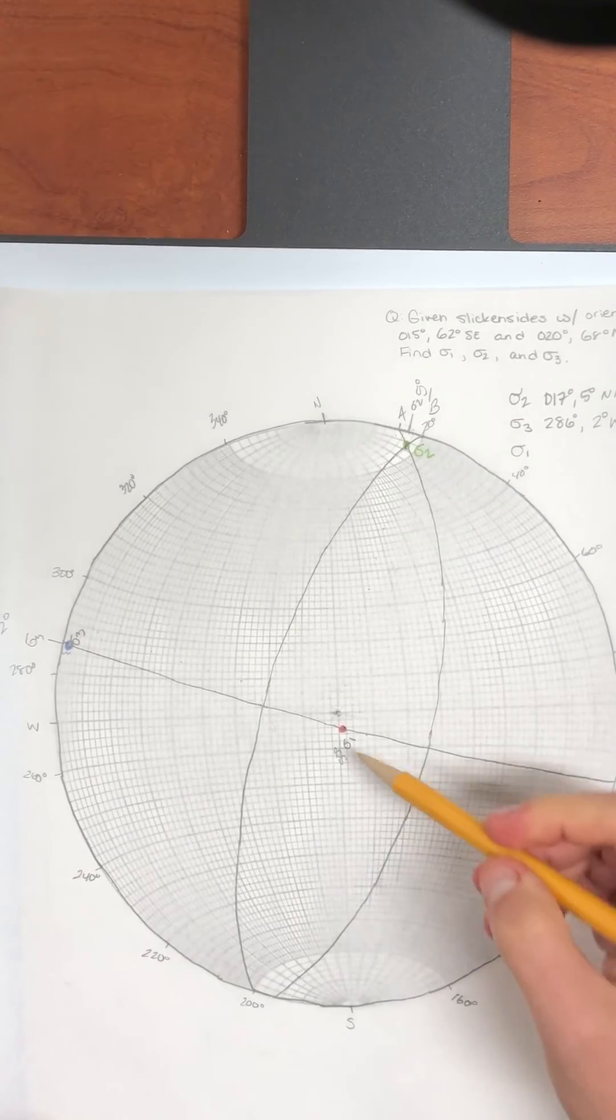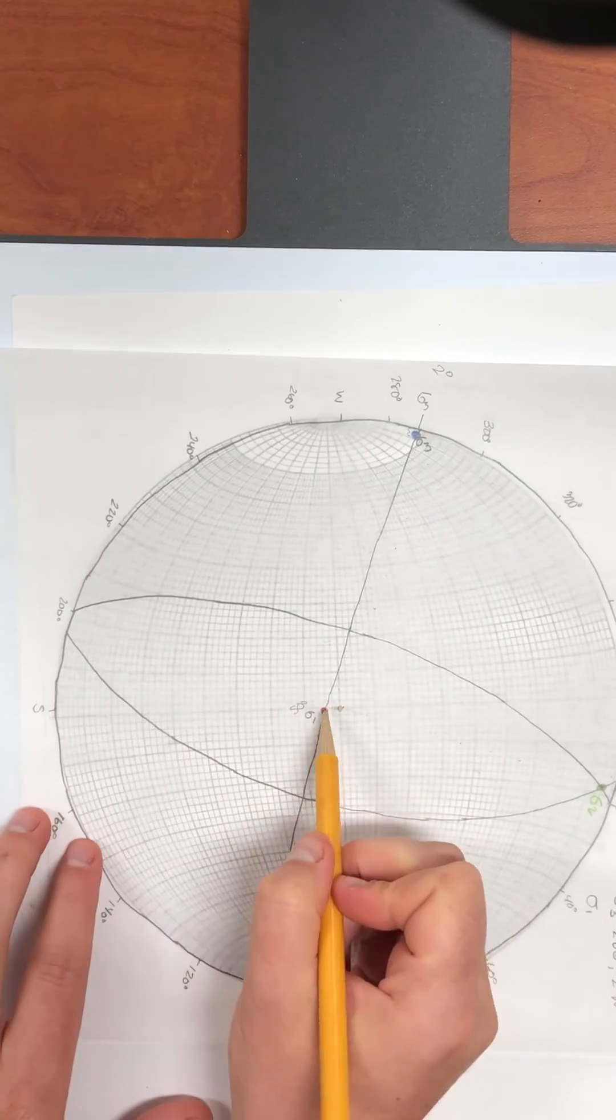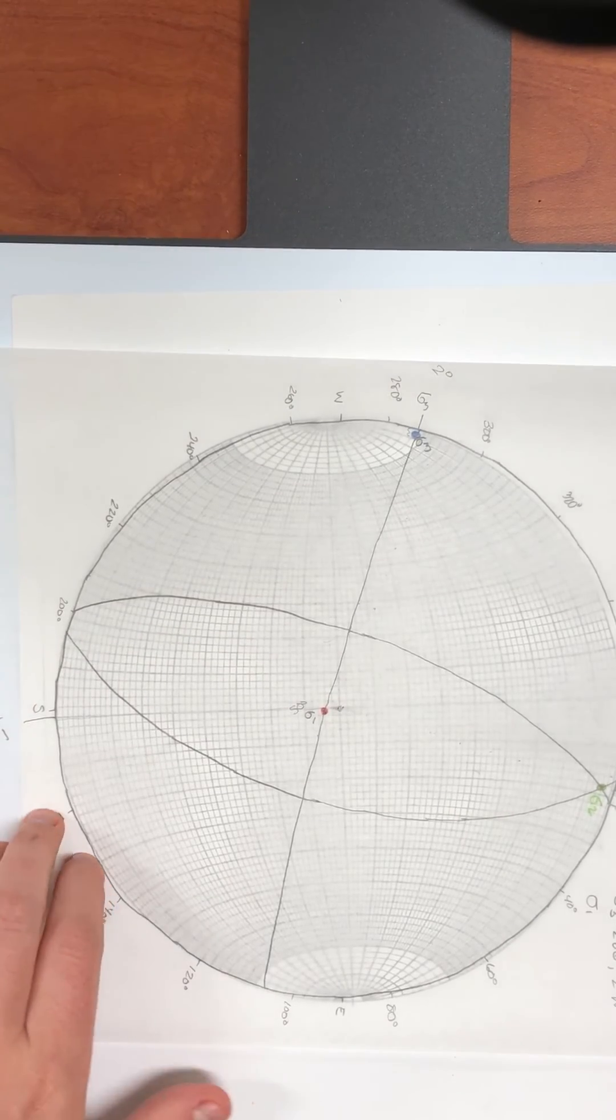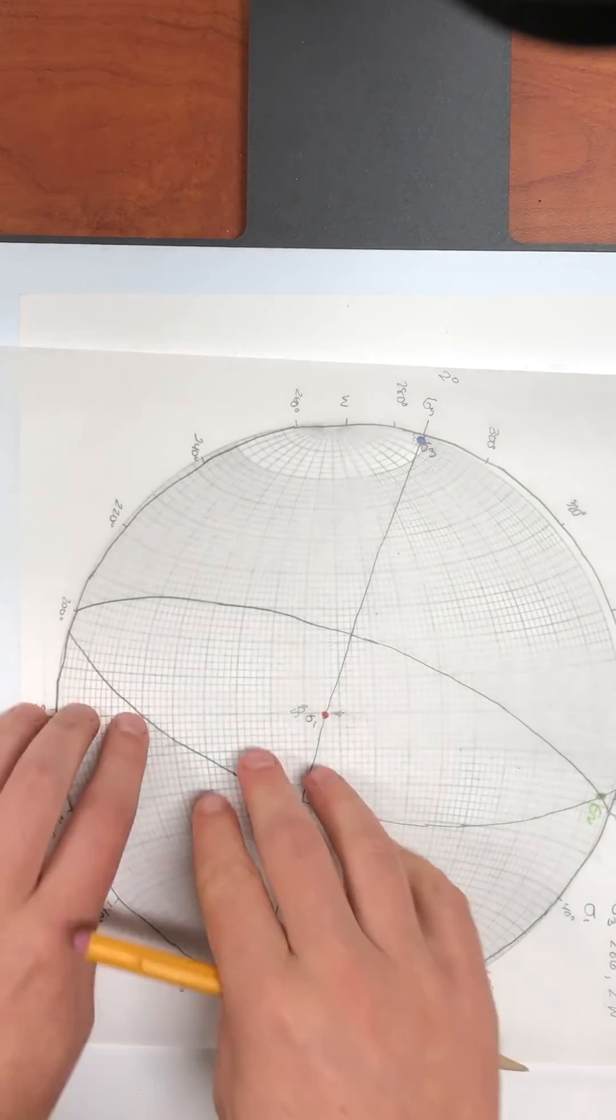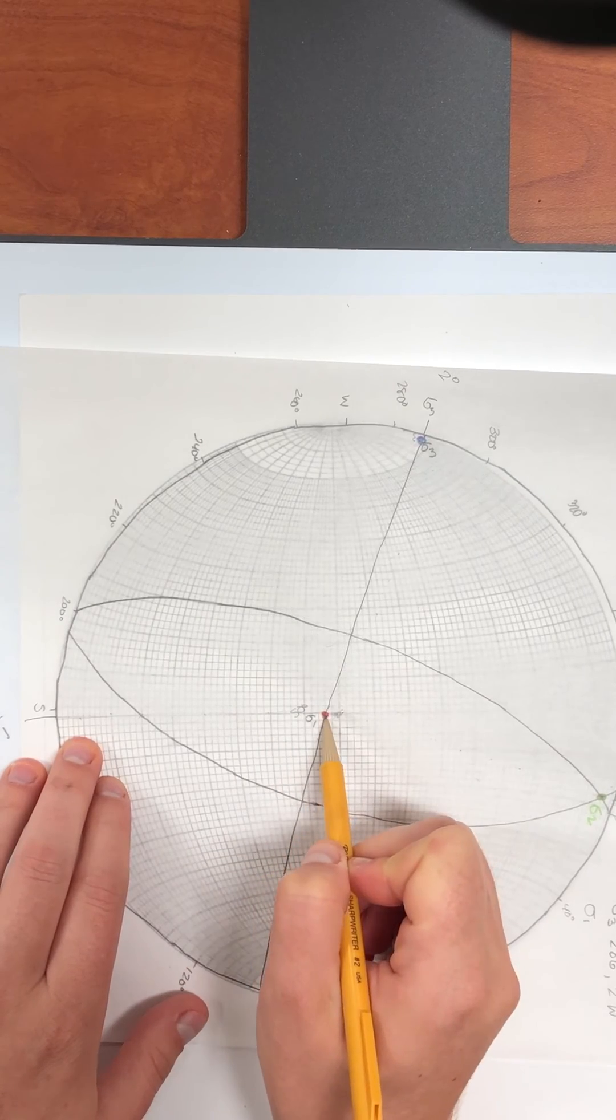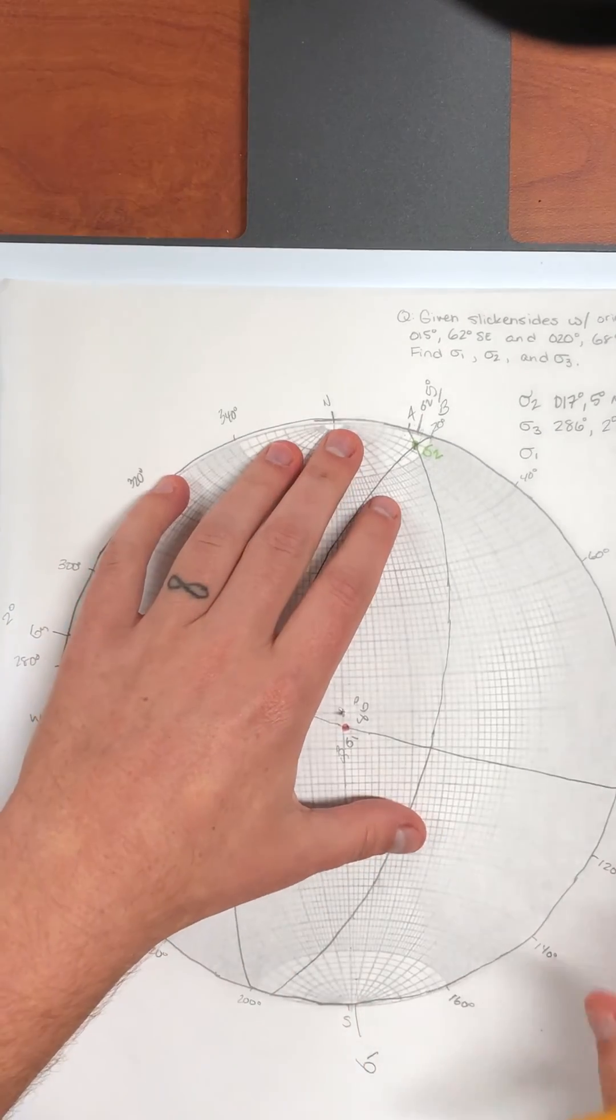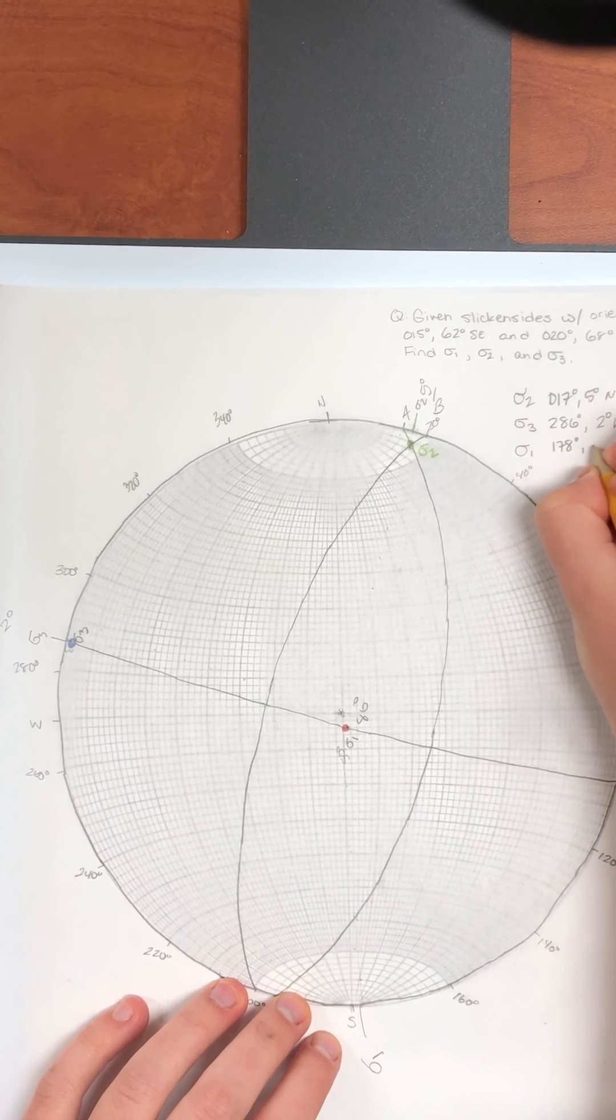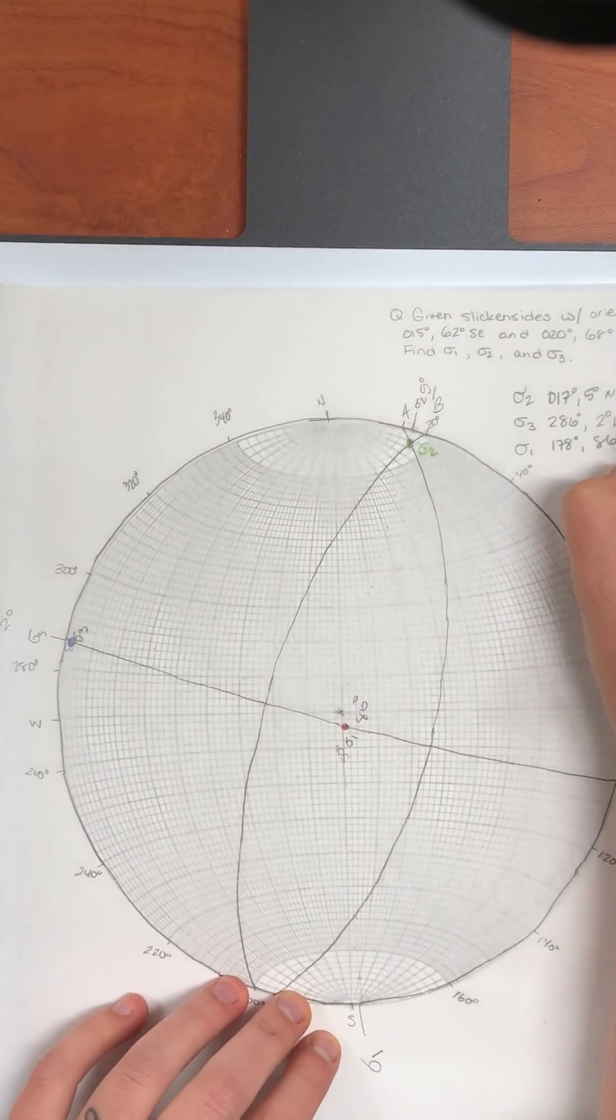Finally, we'll do sigma one. So I'm going to take sigma one down here, rotate it to the horizontal. Yep. Put a tick mark. Remind myself that that's sigma one. And I can rotate. Oh, I forgot to count. Sorry, guys. 10, 20, 30, 40, 50, 60, 70, 80, 86. So it's plunging 86 degrees. Very, very steep. And if this is 180, this is 178. So 178 and 86 degrees. And it's plunging. If I take my pencil, I can tilt it over just a little bit to the south.